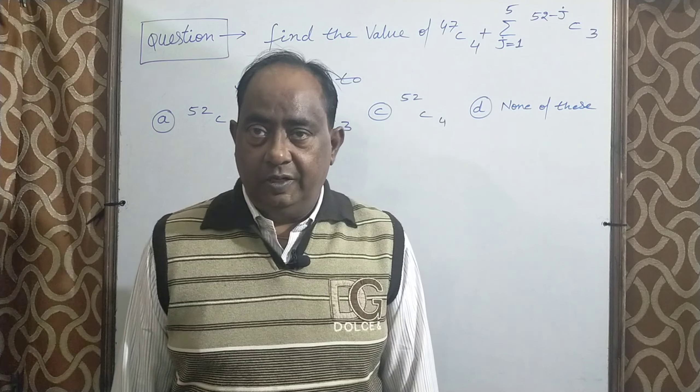First question: find the value of 47C4 plus summation J equal 1 to 5, 52 minus J C3 is equal to. तो 4 options हैं, इन में से कोई एक correct answer है। तो सबसे पहले हम इस summation को open करते हैं।